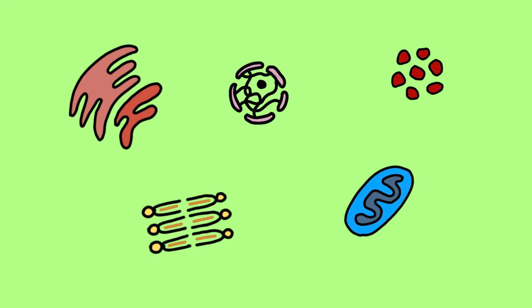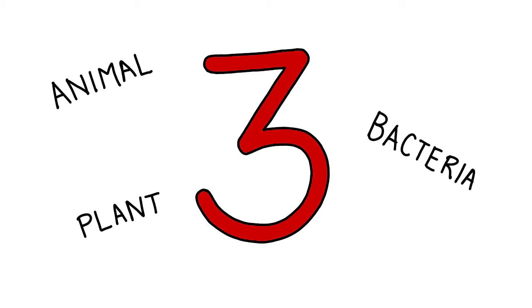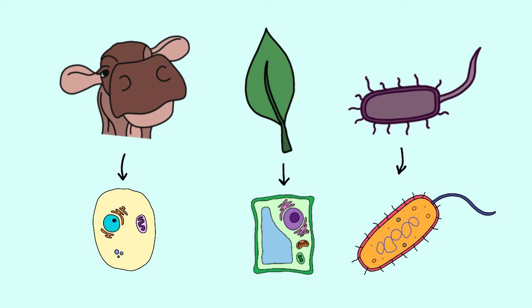On a basic level, I will be introducing three main types of cells today: the animal cell, the plant cell, and the bacteria cell.